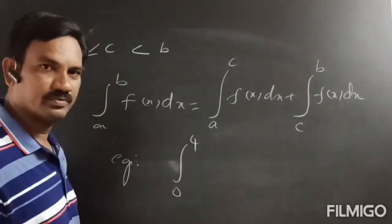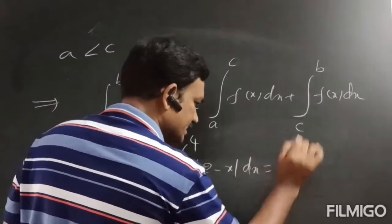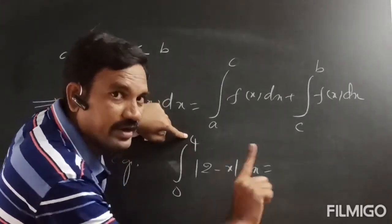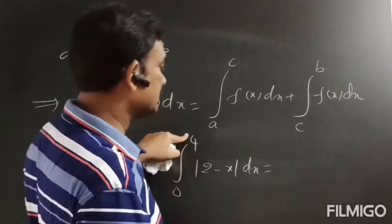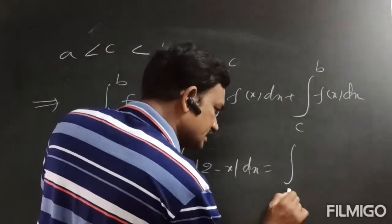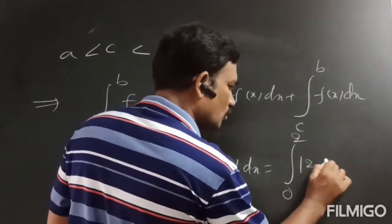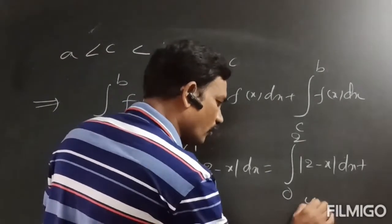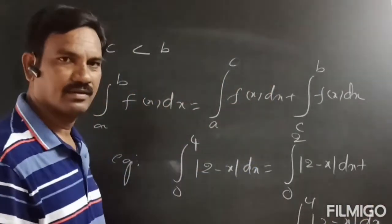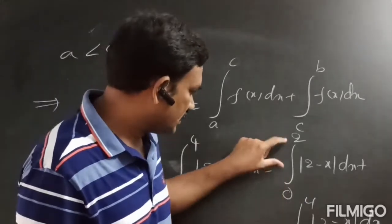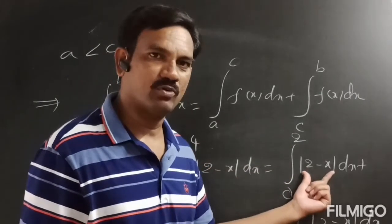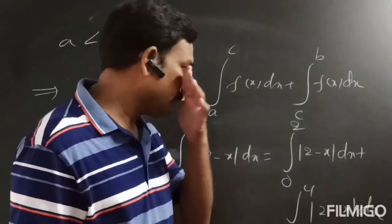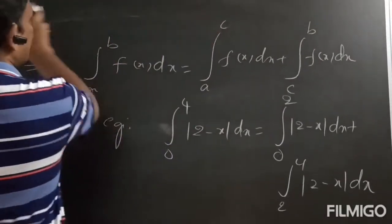Example: integration 0 to 4 of mod(2 minus x)dx. In between 0 to 4, we set mod(2 minus x) equal to 0, giving x equal to 2. So we split it as: integration 0 to 2 of mod(2 minus x)dx plus integration 2 to 4 of mod(2 minus x)dx. Within 0 to 2 and 2 to 4, we simplify the modulus accordingly.